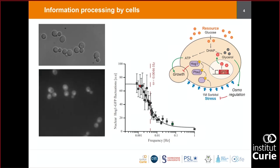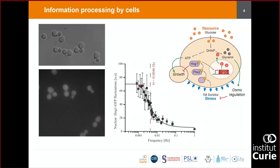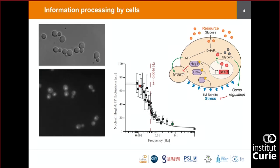We can look at how fast this protein enters the nucleus when you send a periodic stress. What you can measure is how faithfully this protein follows the input signal as a function of frequency. Cells behave like low-pass filters: if you send very fast signals they cannot follow and will average them out, not responding at all. If the signal is slow enough, they faithfully reproduce the input. The critical frequency defines bandwidth — how much information a cell can process — and depends on the biochemical reactions of the proteins at play.